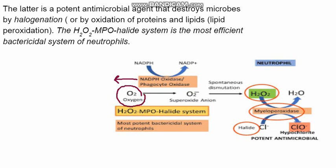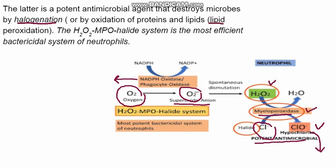The superoxide anion undergoes spontaneous dismutation to form hydrogen peroxide. In the presence of myeloperoxidase — an enzyme present in the azurophilic granules of the neutrophil — hydrogen peroxide converts chloride into hypochlorite. This hypochlorite is a very potent bactericidal antimicrobial. Hypochlorite kills microbes by two processes: halogenization and lipid peroxidation. This is the whole process of the reactive oxygen species pathway.